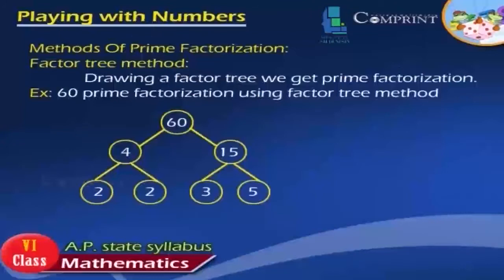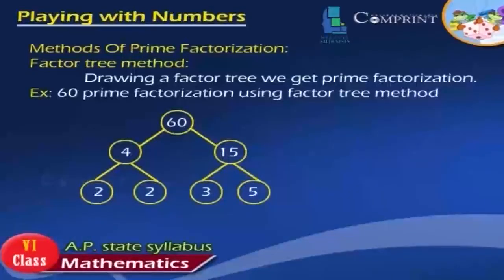Factor Tree Method: By drawing a factor tree, we get the prime factorization. Example: Prime factorization of 60 using the factor tree method — 60 splits into 4 and 15; 4 is further divided into 2 × 2; 15 is divided into 3 × 5.